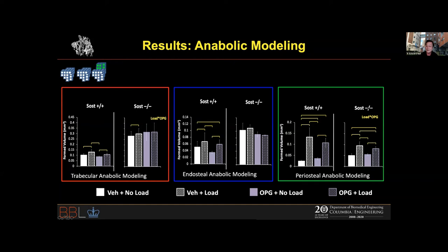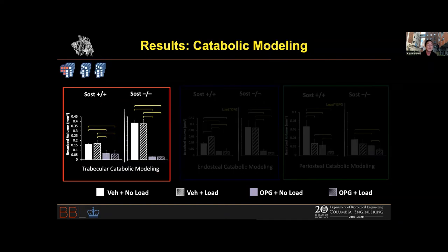Now our results: Our hypothesis is that if you have no sclerostin and you block the resorption pathway, bone should not respond to mechanical loading at all. In trabecular anabolic modeling, in wild type mice, mechanical loading significantly increases formed bone volume. Even after OPG treatment shutting down osteoclasts, a significant mechanical loading response persists, confirming both pathways are important. In sclerostin knockout mice, mechanical loading still induces significant anabolic modeling. However, in those mice given OPG to shut down the resorption pathway, there is absolutely no response to mechanical loading — proving our hypothesis correct. The endosteal surface shows very similar results.